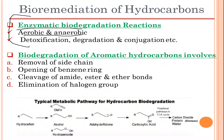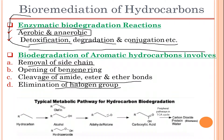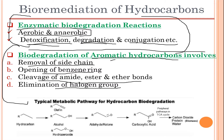Enzymatic biodegradation reactions can be aerobic or anaerobic in nature, and include detoxification, degradation, conjugation, and more. Biodegradation of aromatic hydrocarbons involves removal of side chains, opening of the benzene ring, cleavage of amide, ester, and ether bonds, and elimination of halogen groups.